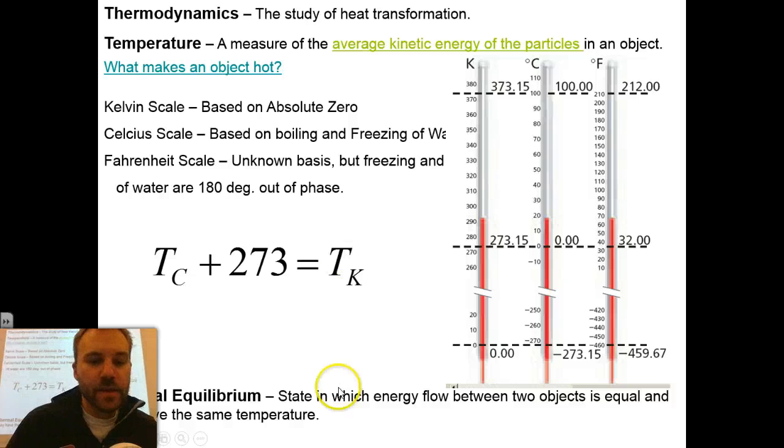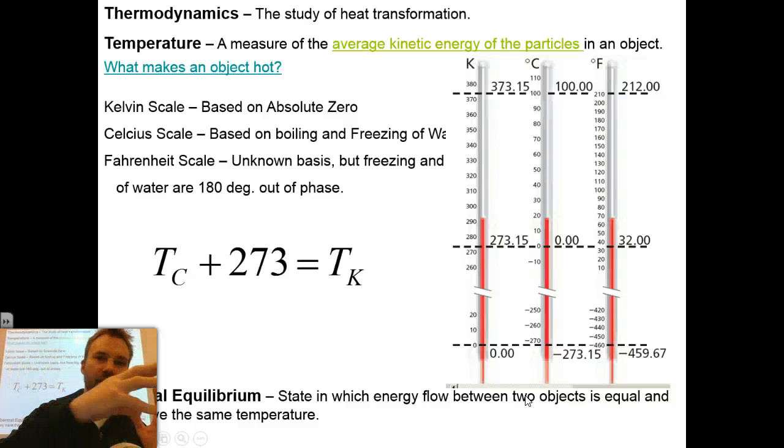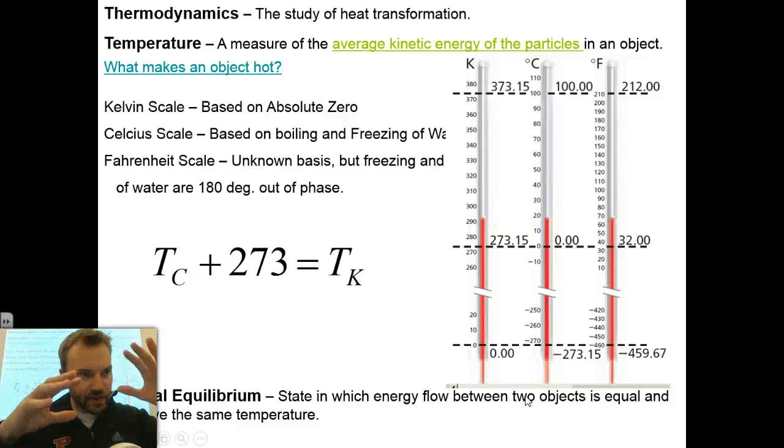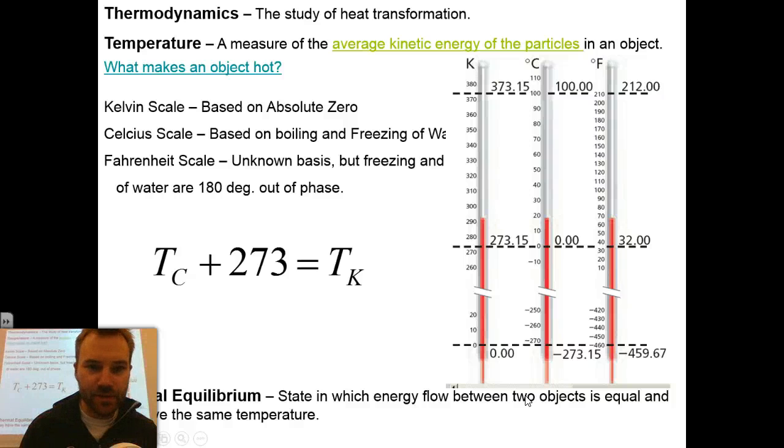Then, thermal equilibrium. It's a state in which energy flow between two objects is equal, and then they have the same temperature. So, energy is done flowing between the two objects. The hotter one has given enough of its energy to where it can't get any more over here, and we have what's called equilibrium, and they end up at the same temperature.